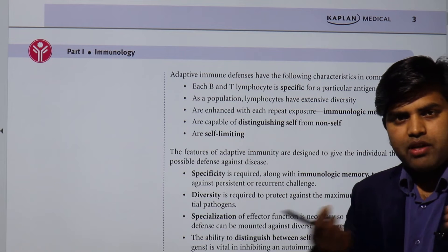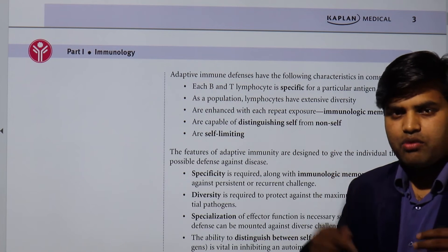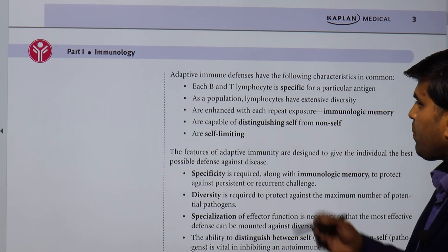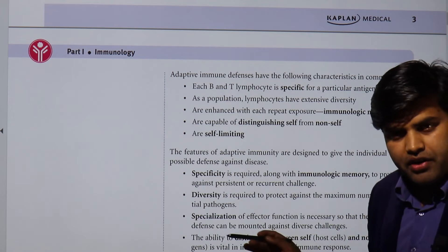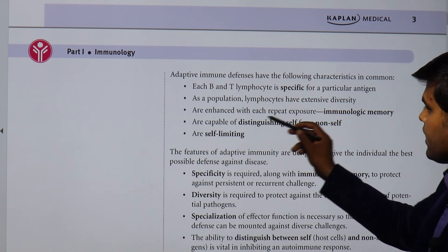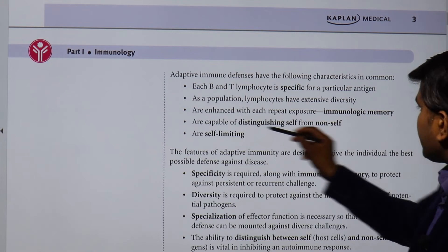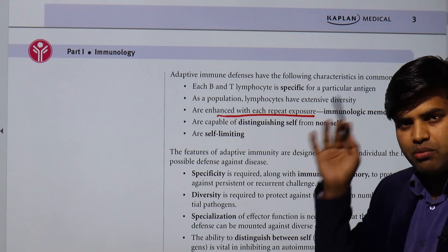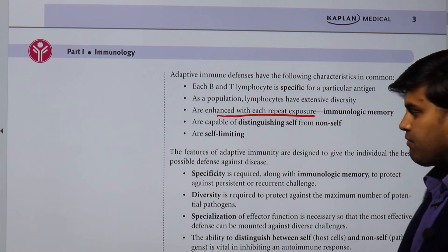There are many parts of that bacterium which will activate the immune system, and for each specific part there will be a specific antibody. As a population, lymphocytes have extensive diversity — they can act against any bacteria or virus present in the world. And adaptive immunity is enhanced with each repeated exposure. If there is a previous infection, the immune system keeps the record of that, and next time it will act rapidly and clear that infection.